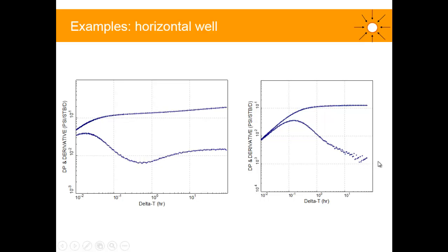So horizontal radial flow regime is not there. This late time stabilization is not there. You don't have the permeability. So that means you cannot have the length of the well, and you cannot have KV here. You don't see this first early time radial flow regime.